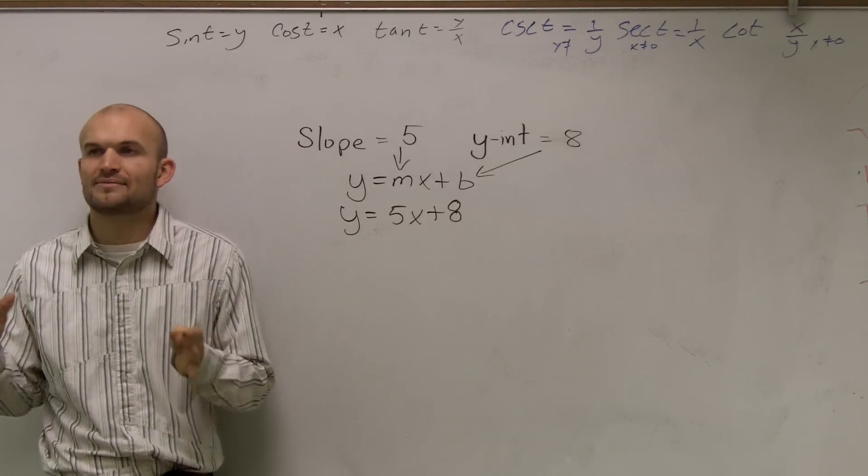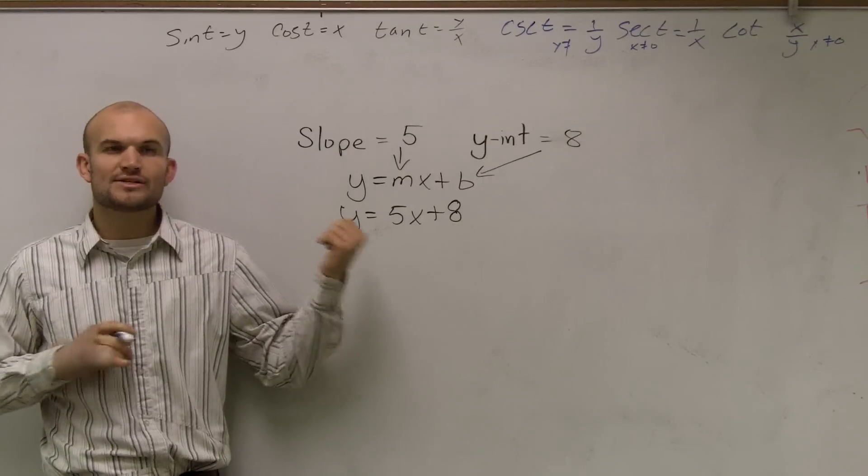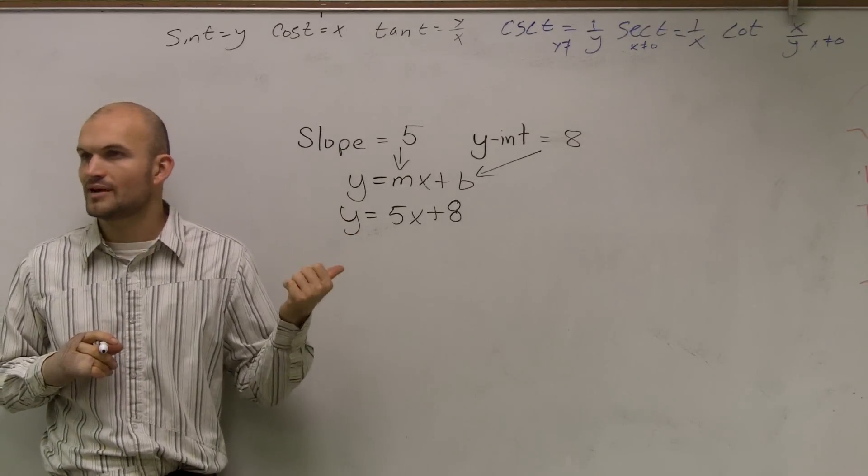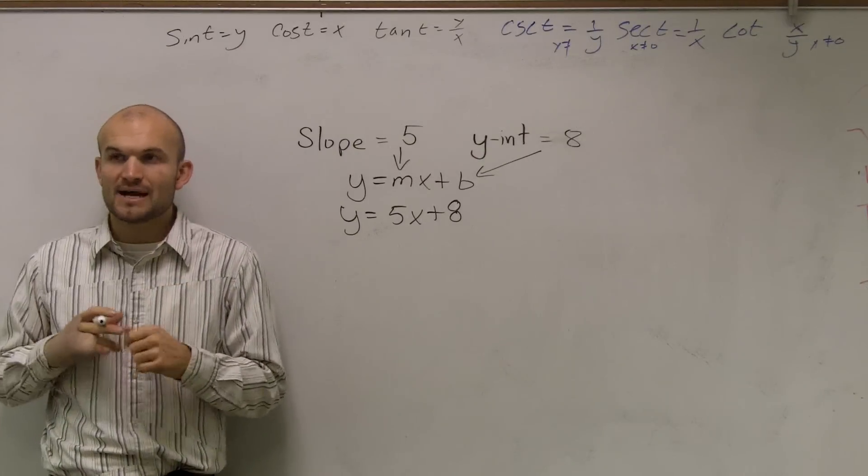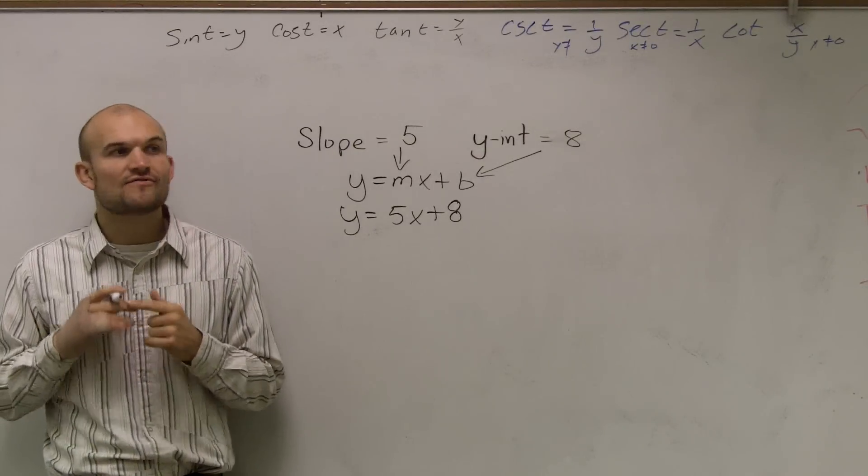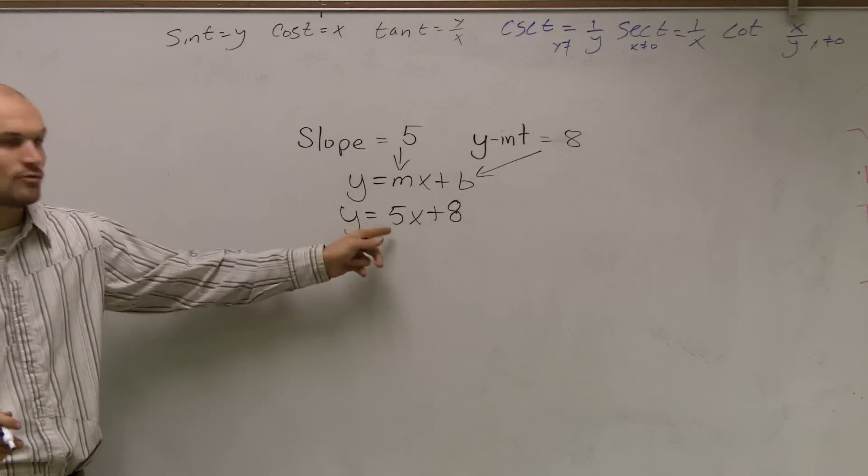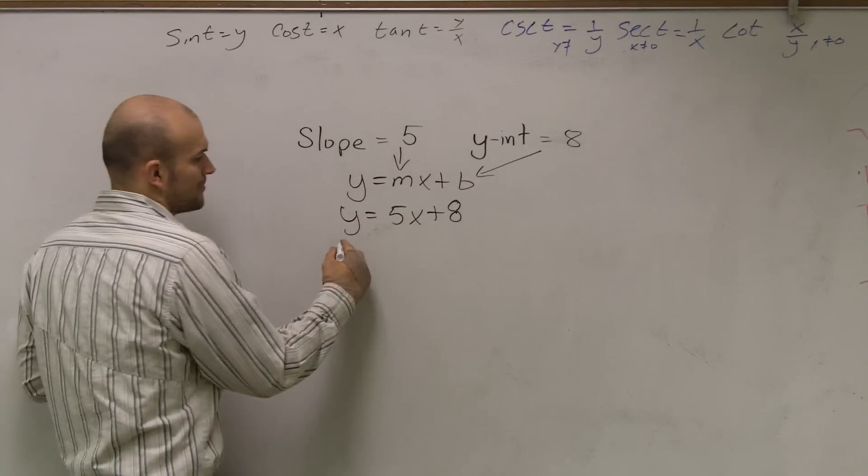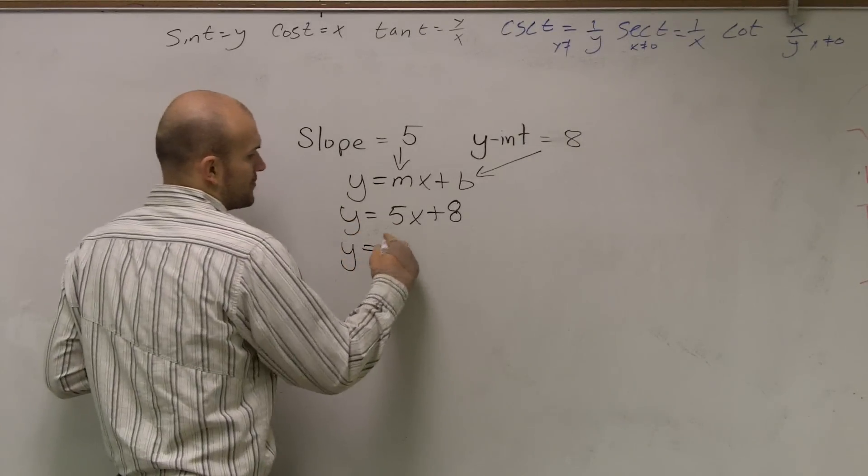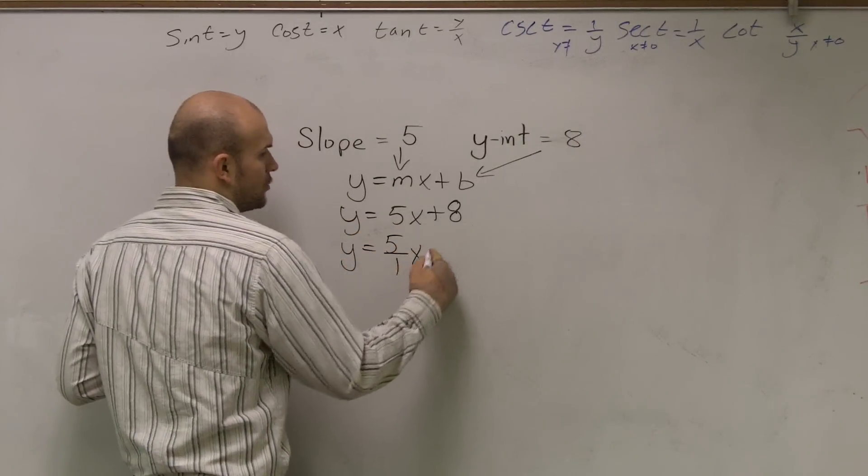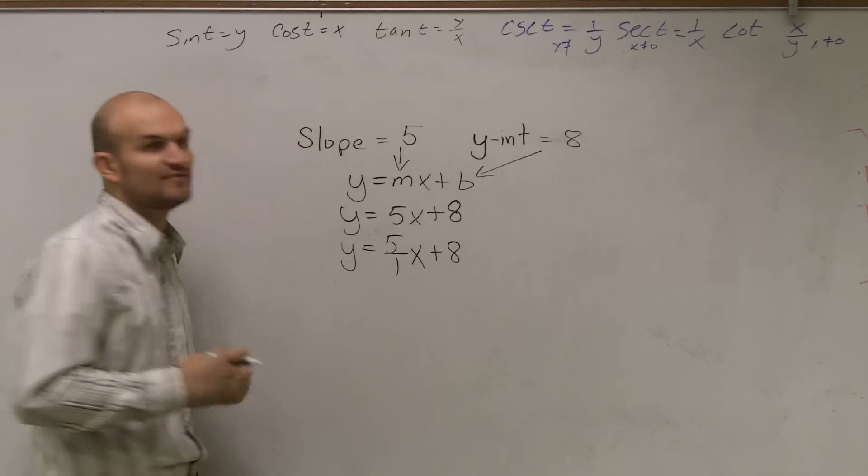Now, here's where the stipulation comes through. Whenever you're given a whole number for your slope, here's a little tip. If I'm asking you to graph it, it's very helpful to rewrite your slope as a fraction. If it's already written as a whole number, you can write it as 5 over 1.